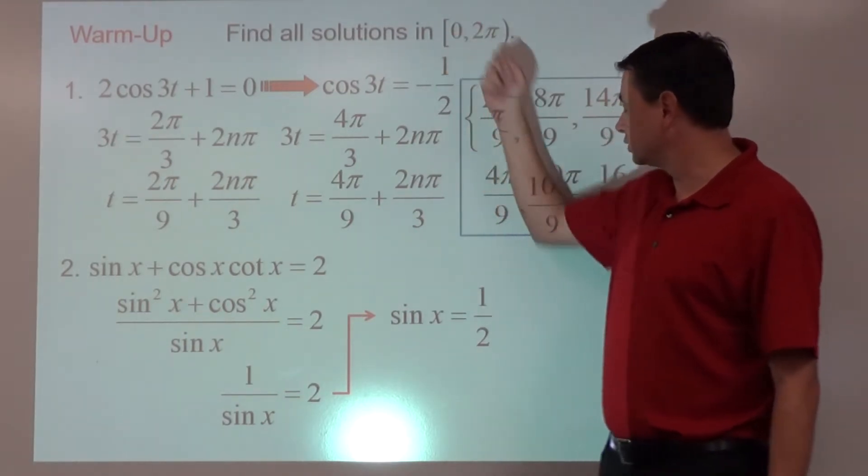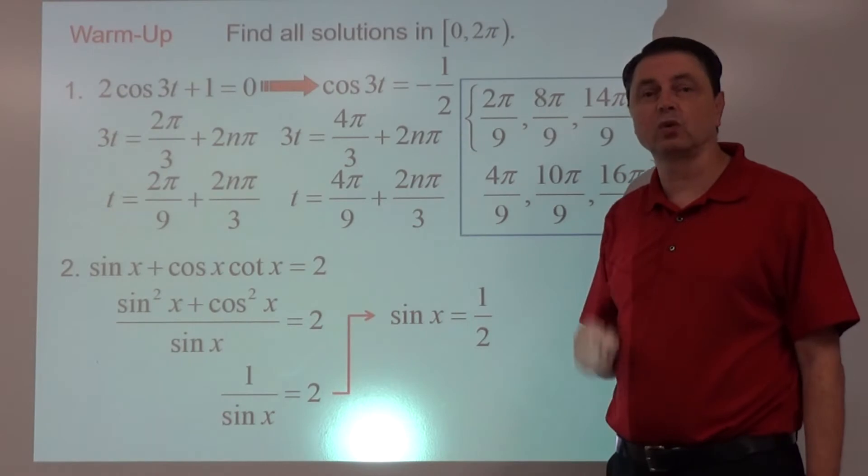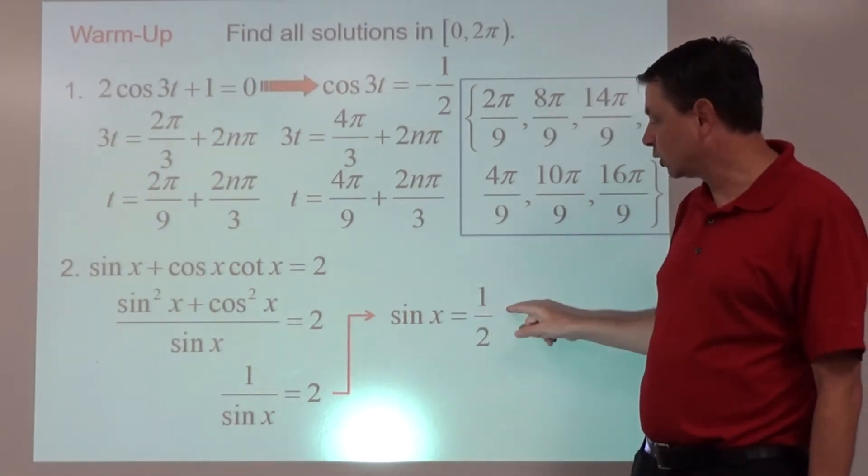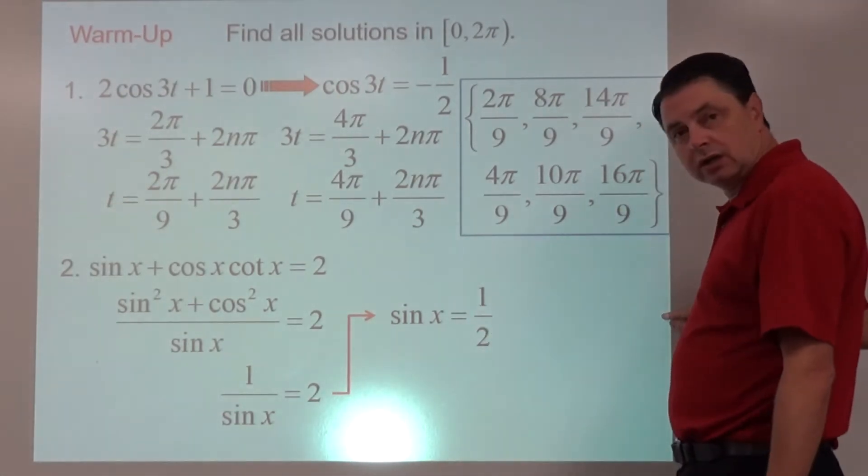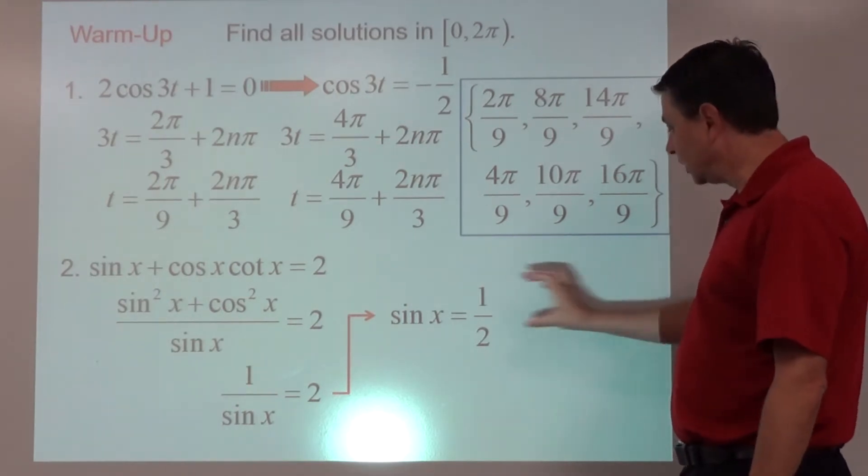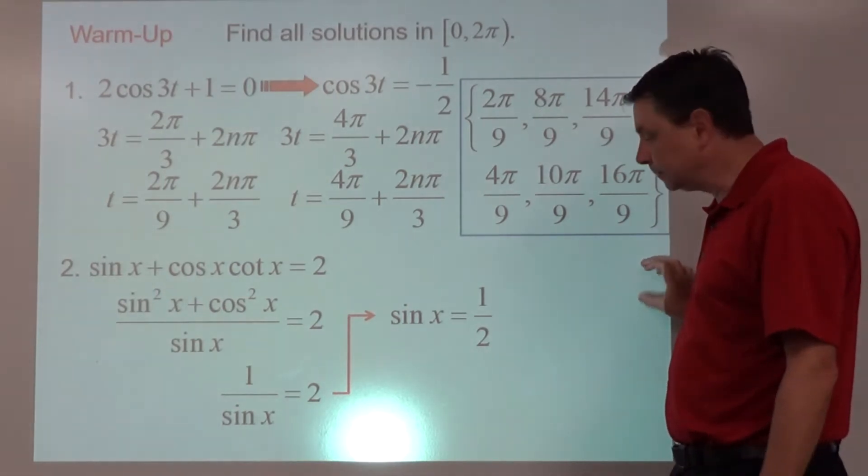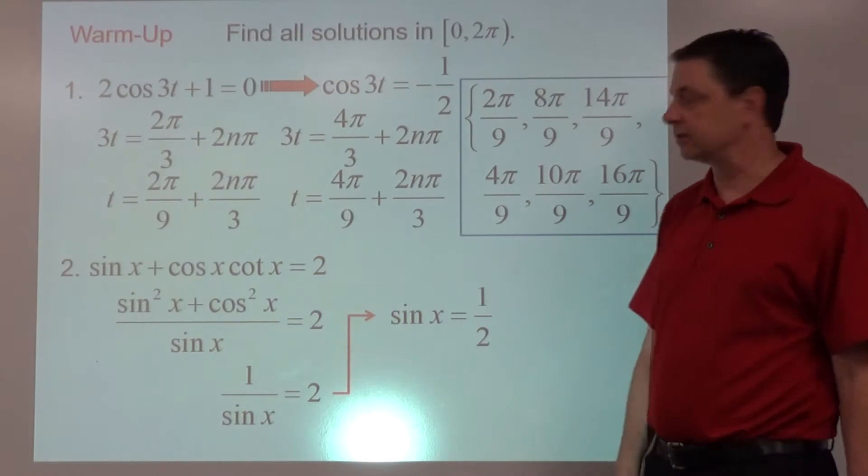And again, from 0 to 2π, sine's going to be positive in quadrants 1 and 2. The y coordinate being 1 half, so we're going to go long going on the x, and then the 1 half being the short going up. So that's going to be π over 6 and 5π over 6.